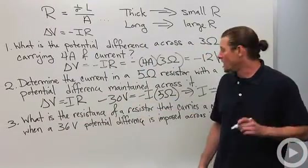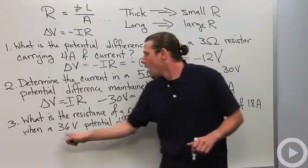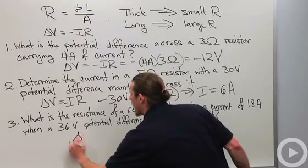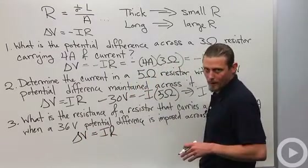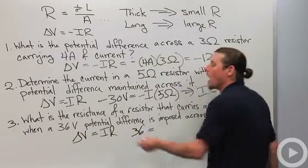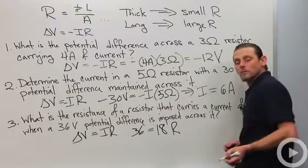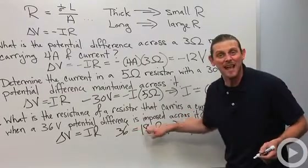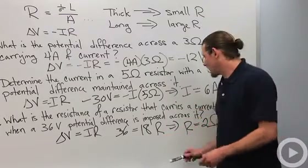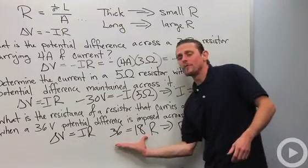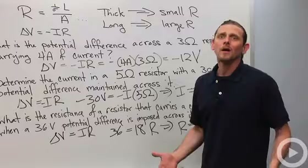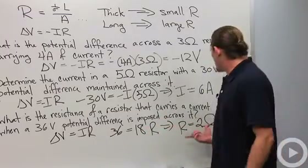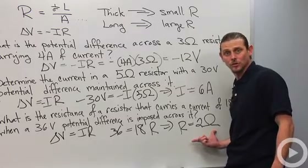Number three: what is the resistance of a resistor that carries a current of 18 amps when a 36-volt potential difference is imposed across it? Using Ohm's Law: delta V equals IR. 36 equals 18 times R, so dividing gives a resistance of 2 ohms. You really need to include units in your answer — whether you carry units through the algebra depends on your teacher, but always make sure the final answer has a unit.